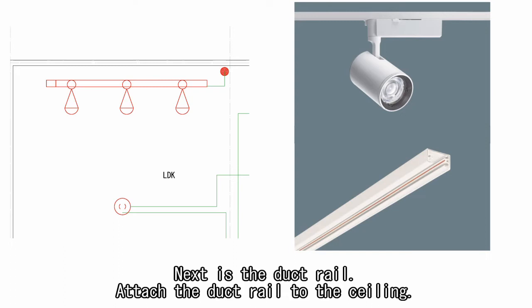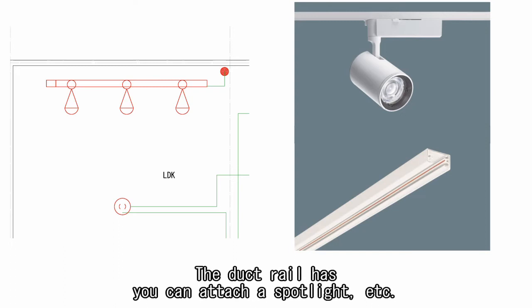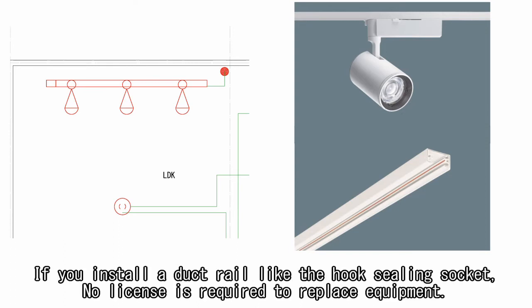Next is the duct rail. Attach the duct rail to the ceiling. The duct rail allows you to attach a spotlight, etc. If you install a duct rail like the hook ceiling socket, no license is required to replace equipment.